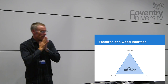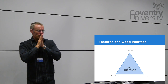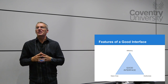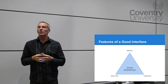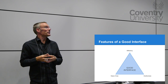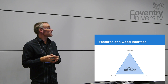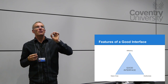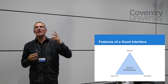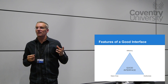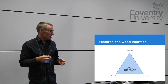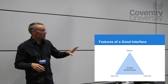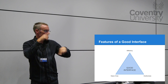We all know what a bad interface looks like — we've all seen bad design. There are three areas that make good design, so let's think about the opposite. The first feature of a bad design is inefficiency: it takes lots of clicks to do what you need to do.